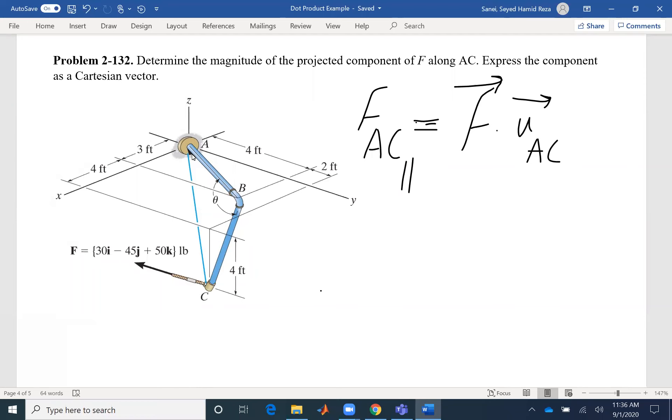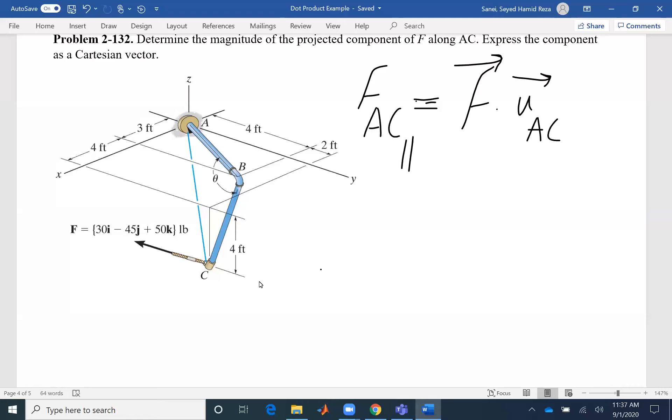A is on the origin, so the coordinate is 0, 0, 0. It's just the coordinate of C. So let's write our RAC and UAC. RAC, the position vector from A to C or the coordinate of C minus the coordinate of A, would be 7i plus 6j minus 4k. I look at the unit system. It's feet.